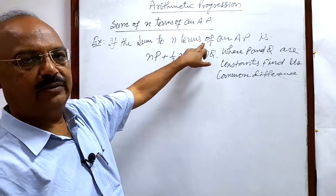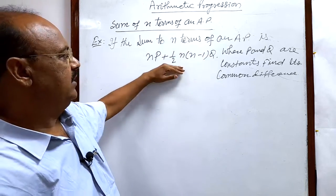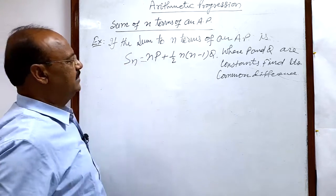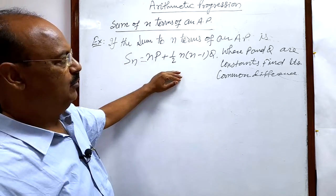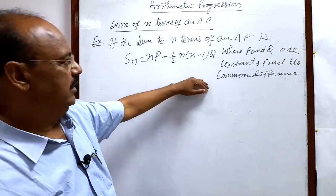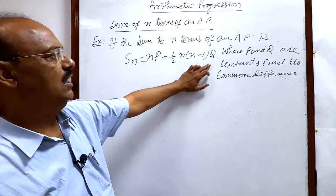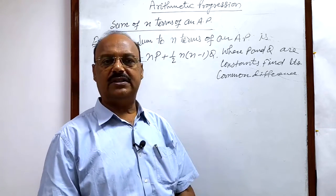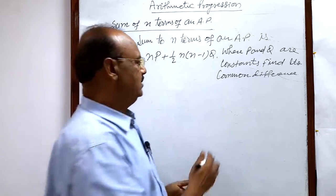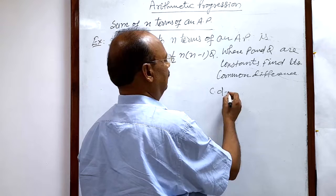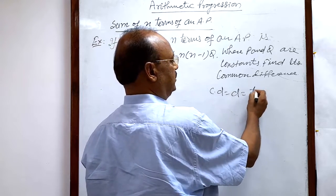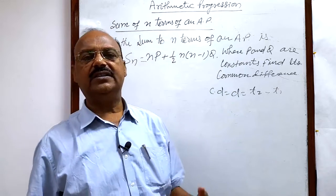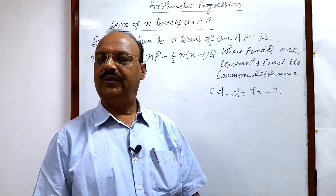Here given sum to n terms, and sum to n terms is denoted by Sn. So Sn is here given, we have to find out common difference, and here mention that p and q are constants. So how to get common difference? Common difference we can get very easily, common difference d is equal to t2 minus t1, second term minus first term.